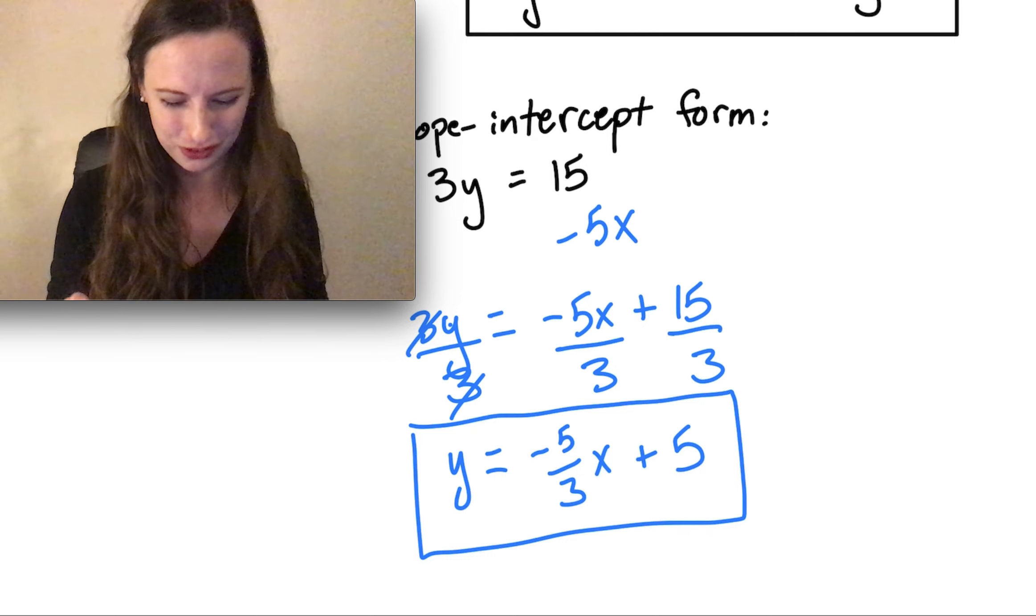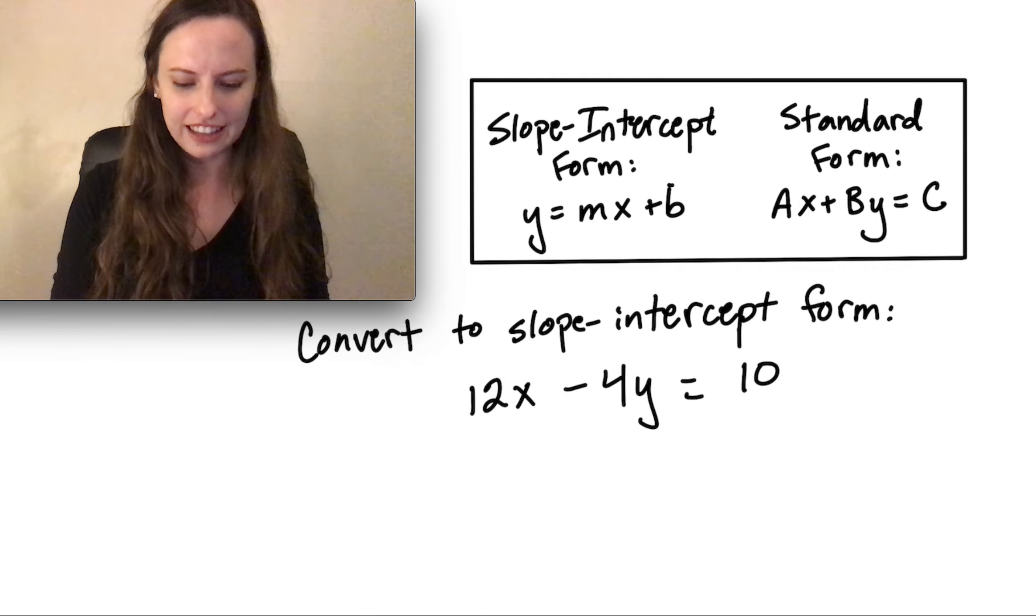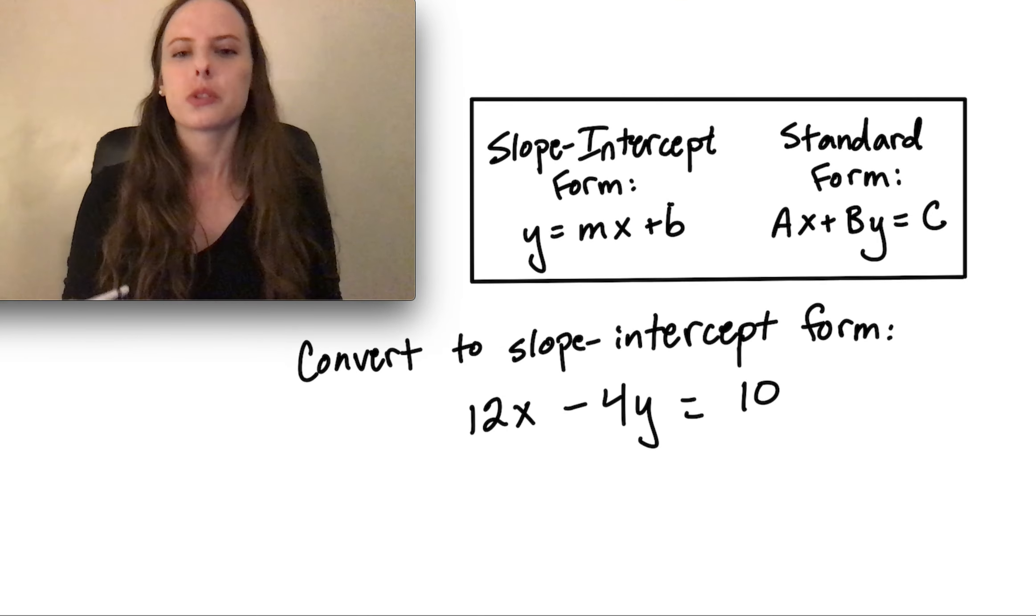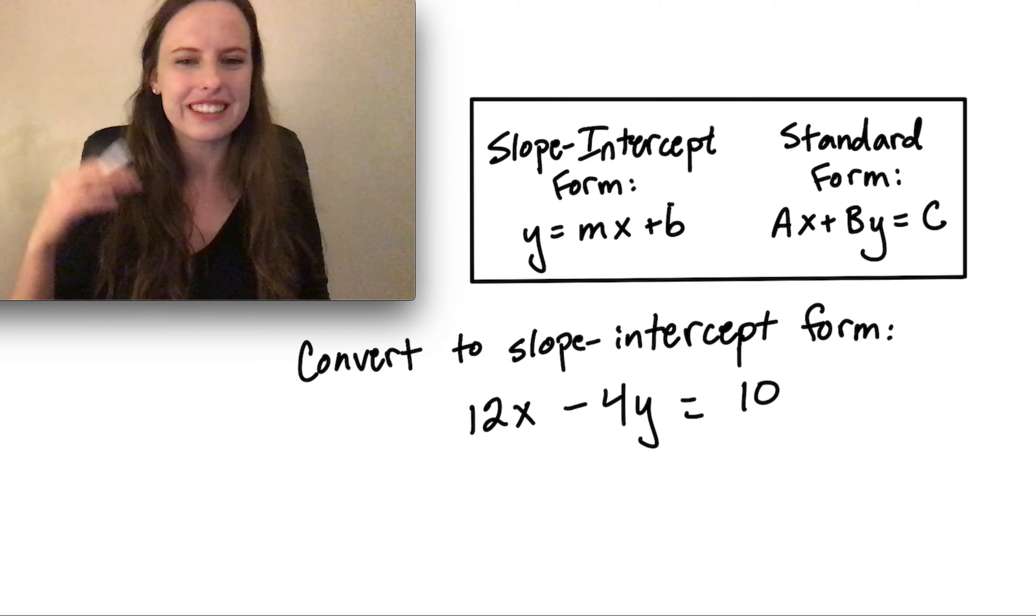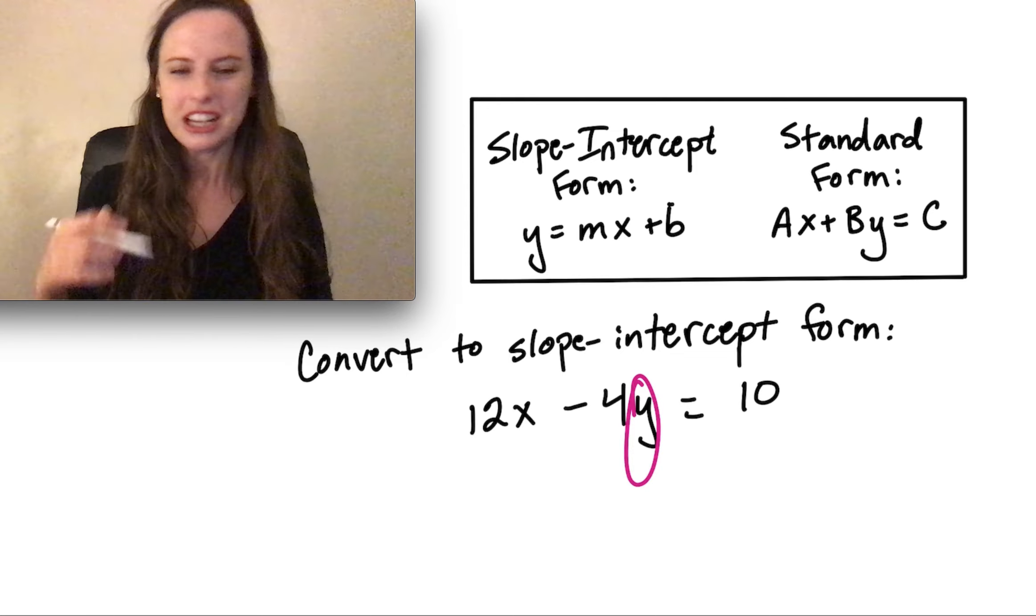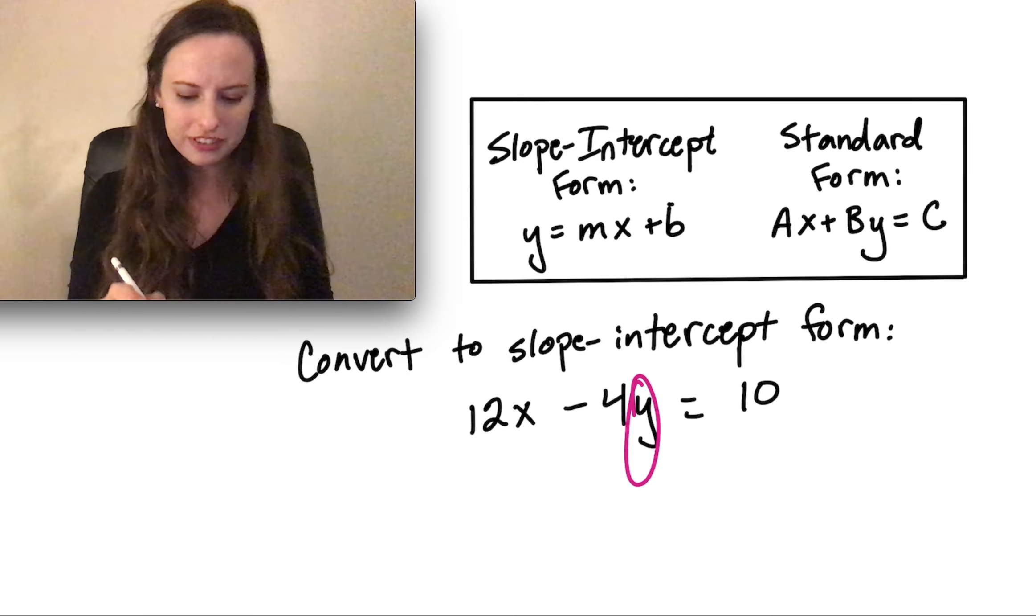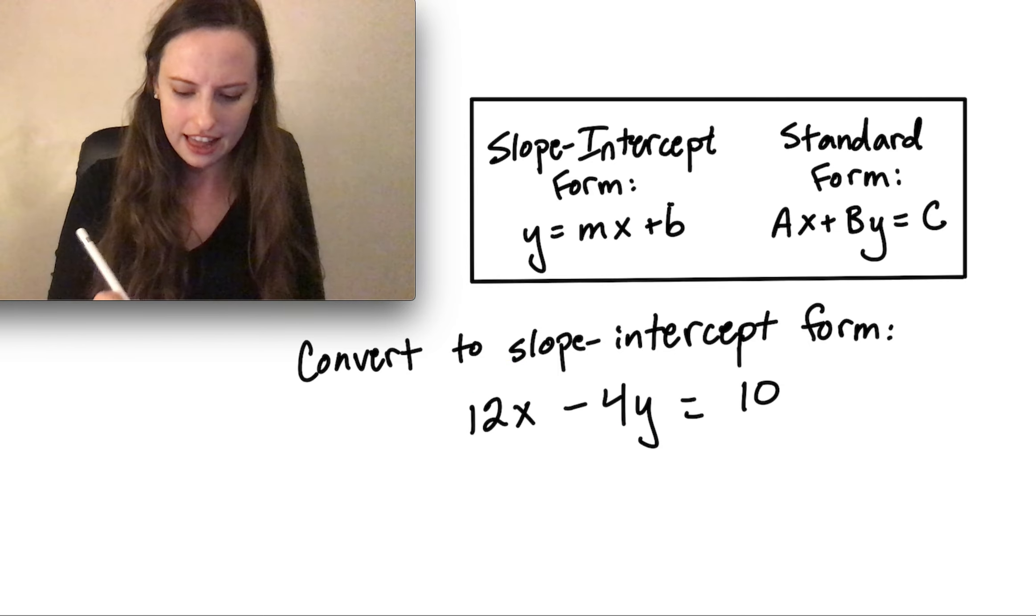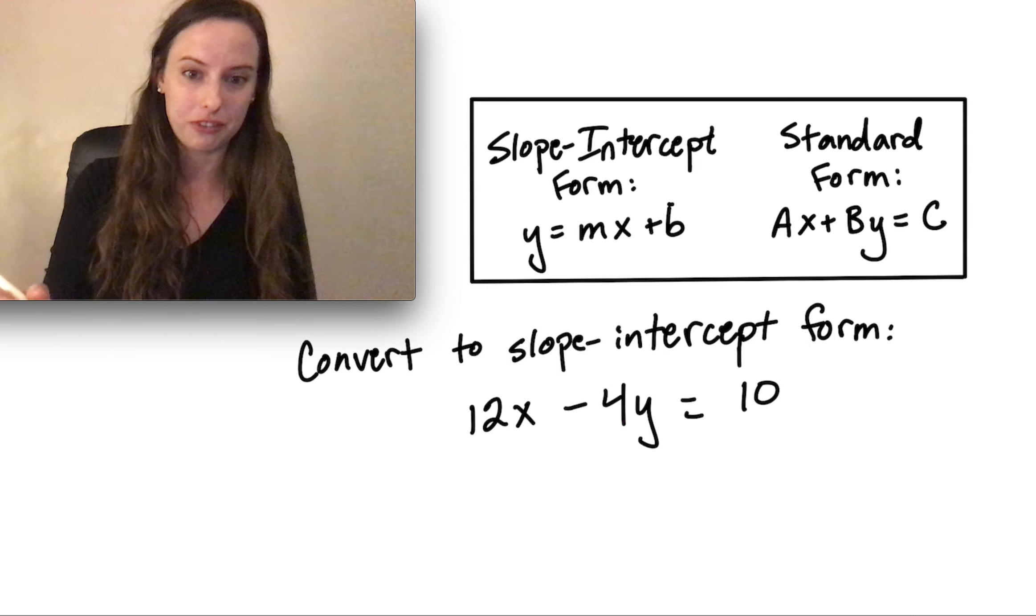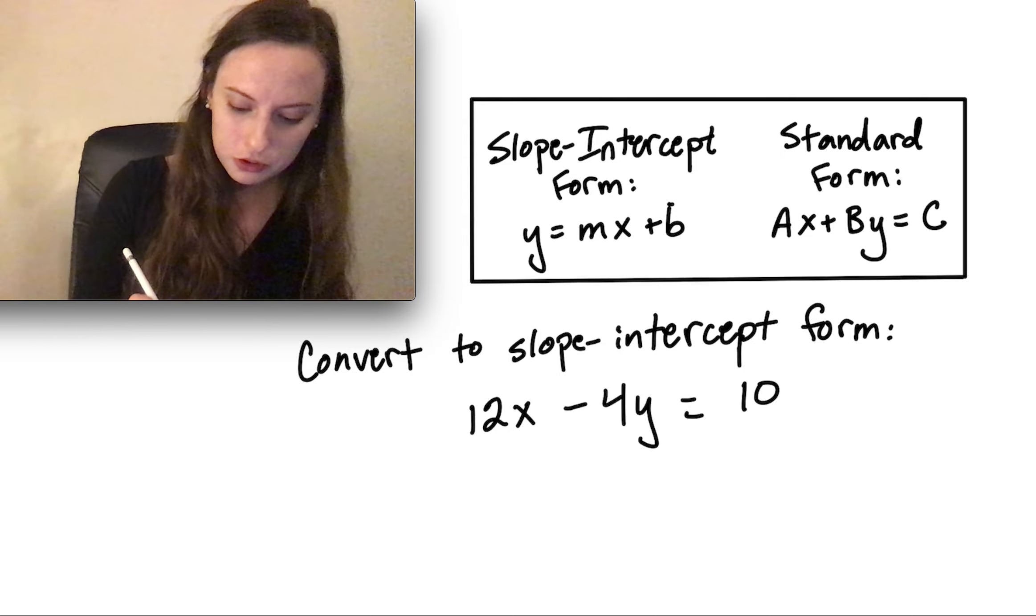One more example, and then we're done. For this last example, we have 12x minus 4y equals 10. Again, our main goal is to get y by itself. You see this pattern. We're always going to start by moving that x term over to the other side of the equal sign, and then dividing by this number in front of the y.